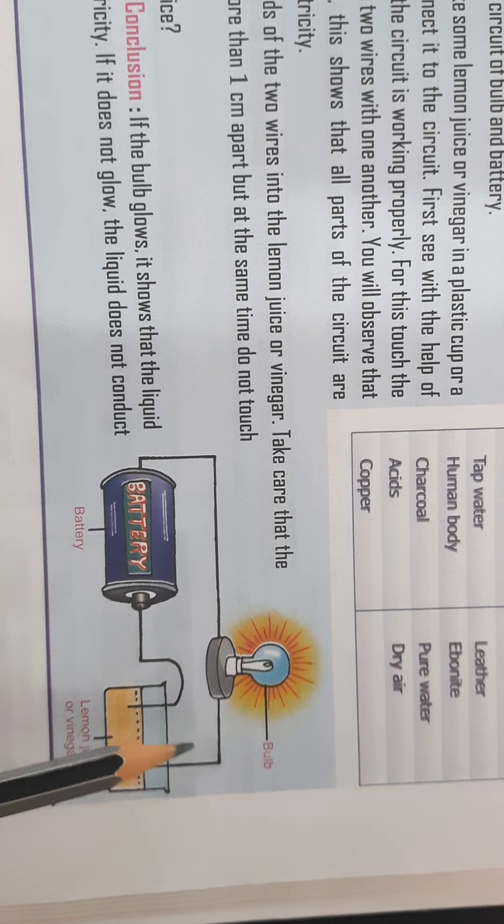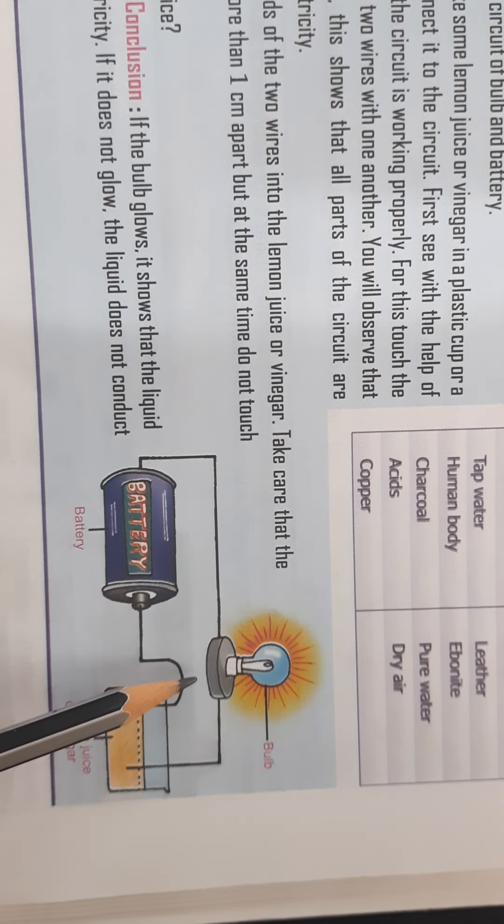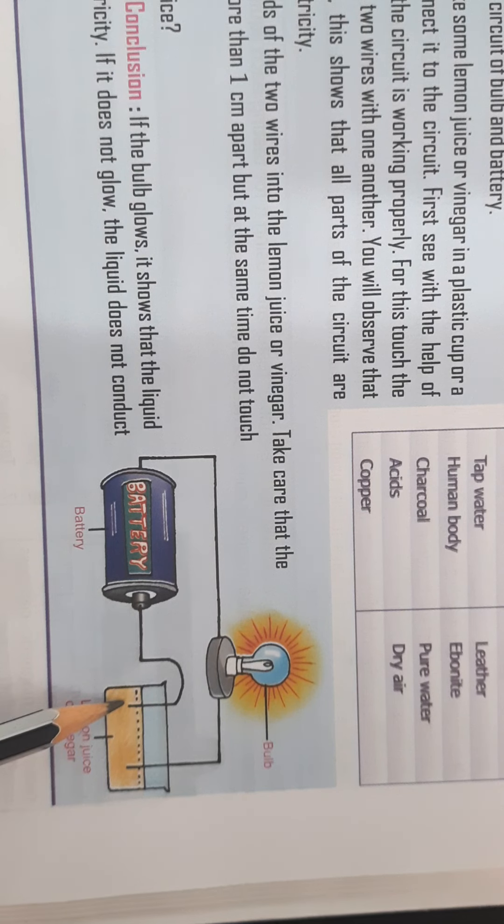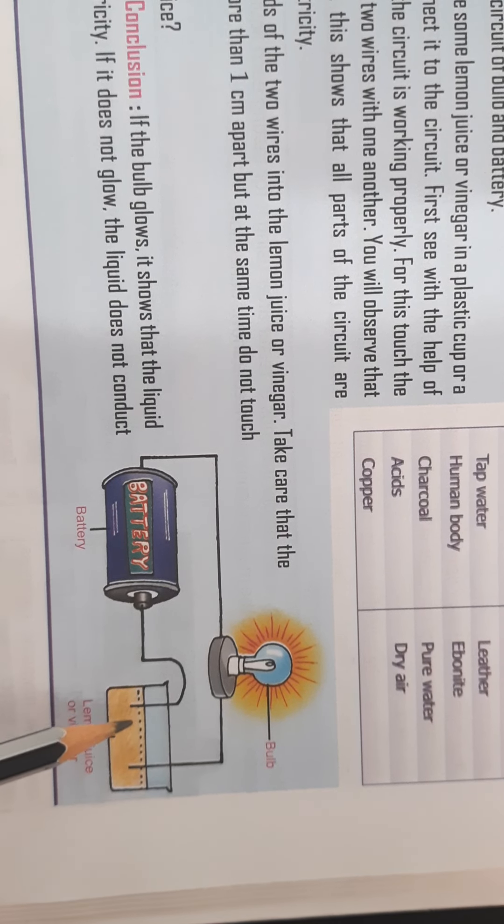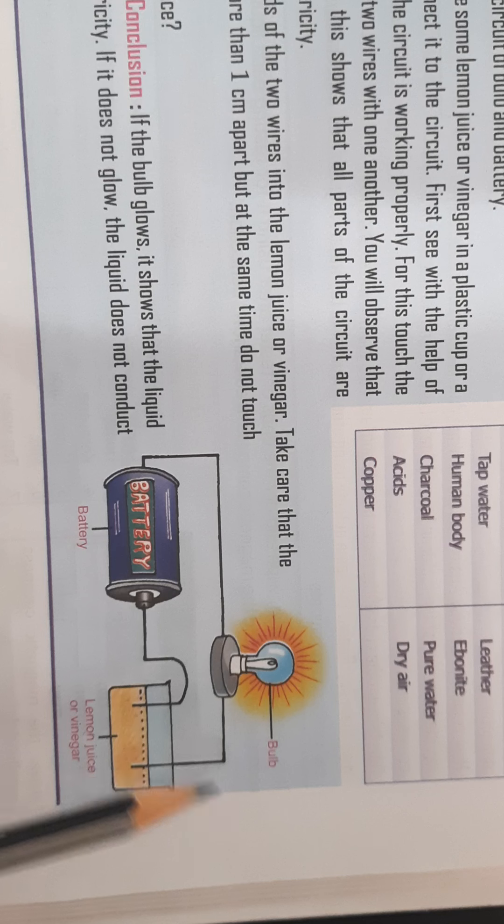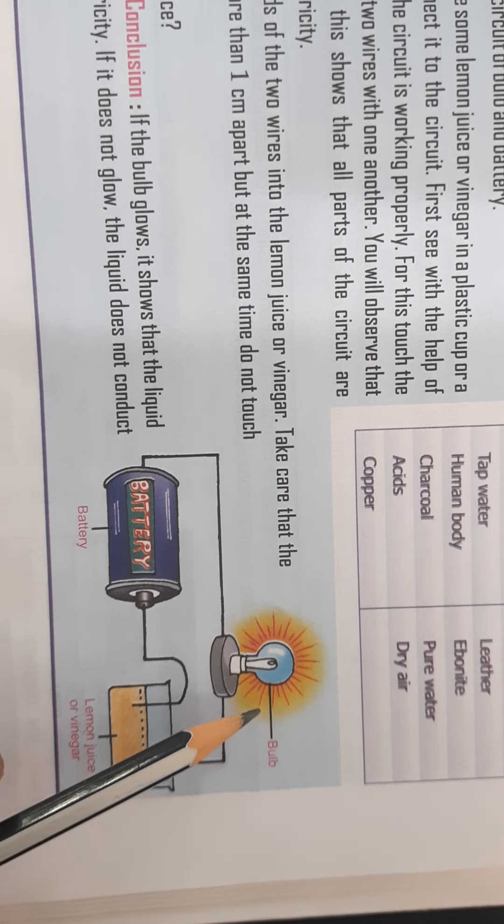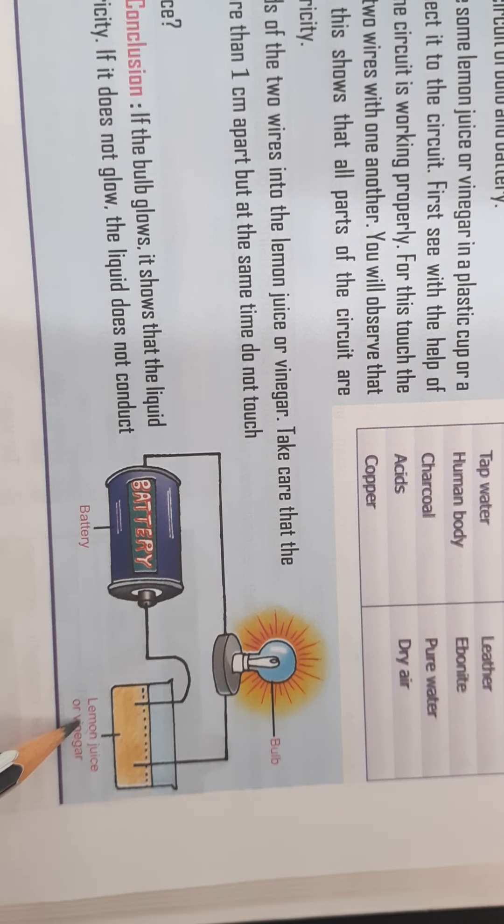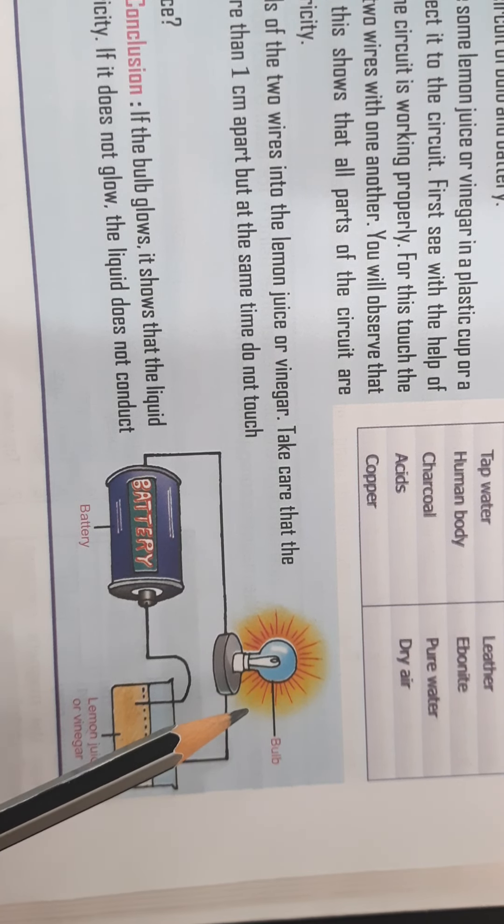That means you are connected to a battery and a bulb. Then you have to take care that it is at a distance with each other, that they do not touch. When you dip both the ends of the wire in this liquid, you will see that the bulb will glow. This shows that lemon juice or vinegars conduct electricity.